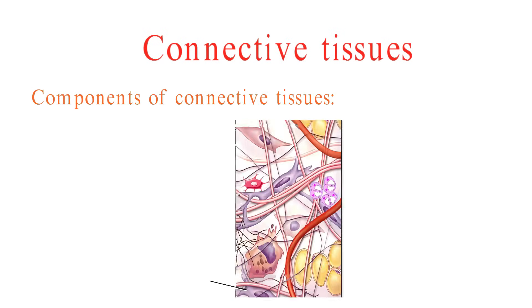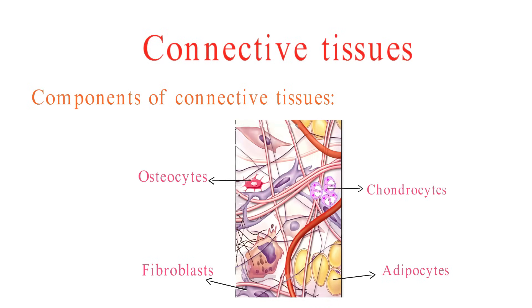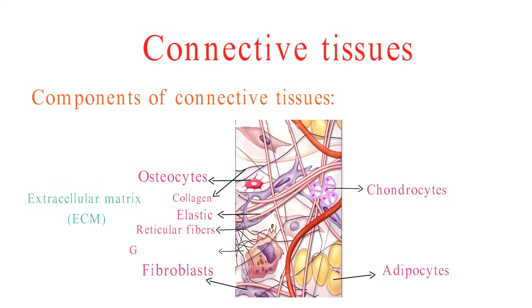Now, let's take a closer look at what makes up connective tissues. Connective tissues contain various cell types, including fibroblasts, which produce the extracellular matrix; adipocytes, responsible for fat storage; and chondrocytes and osteocytes, found in cartilage and bone, respectively. The extracellular matrix, or ECM, is a complex network of proteins and carbohydrates surrounding cells, consisting of protein fibers like collagen and reticular fibers, as well as a gel-like ground substance composed of proteoglycans and glycoproteins.